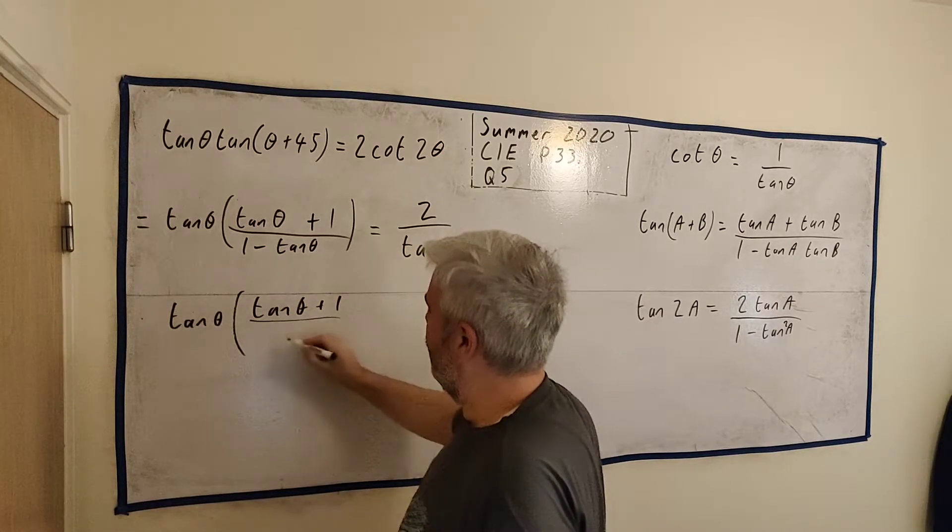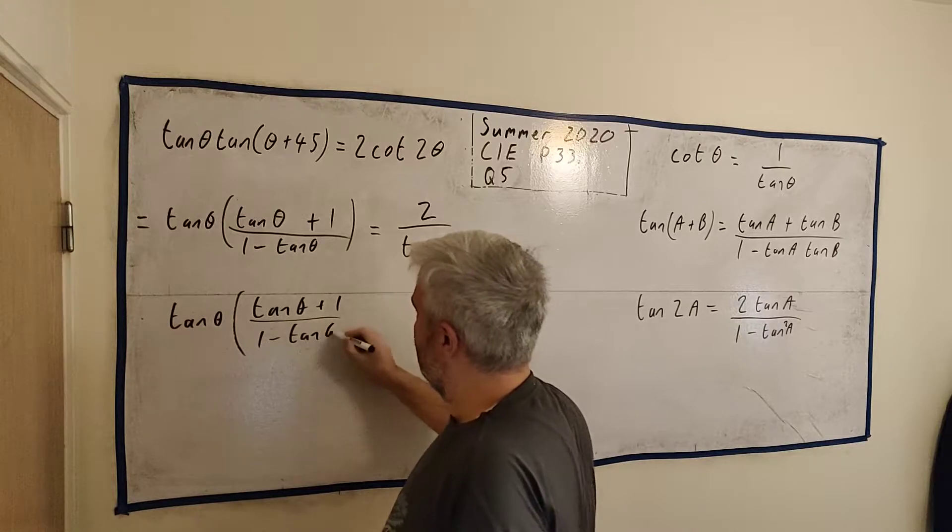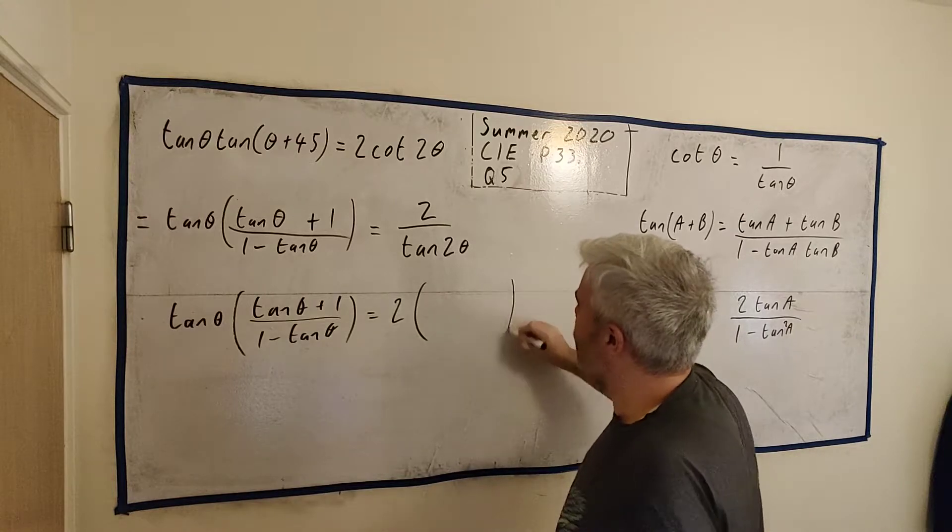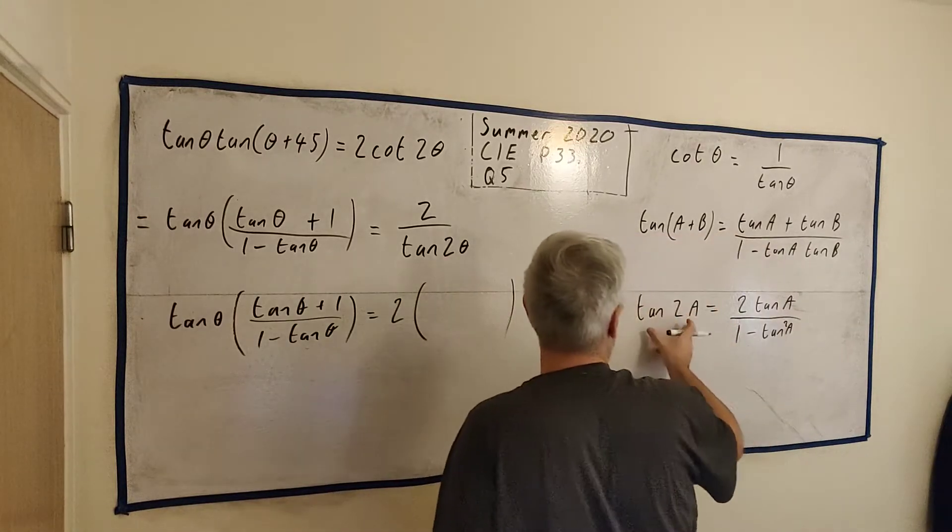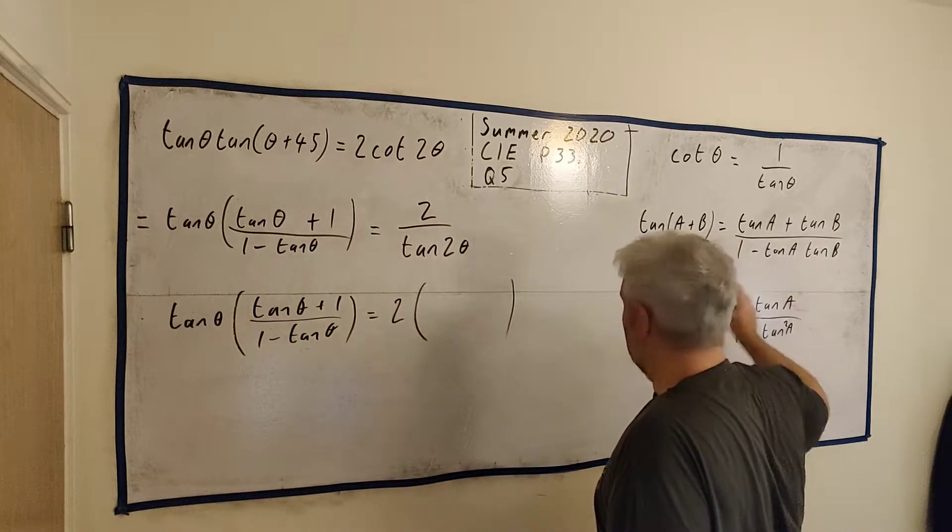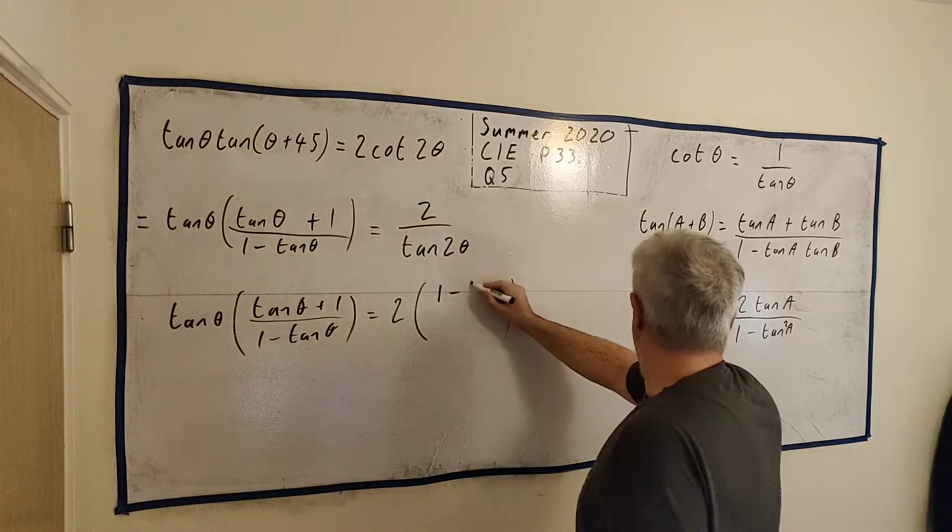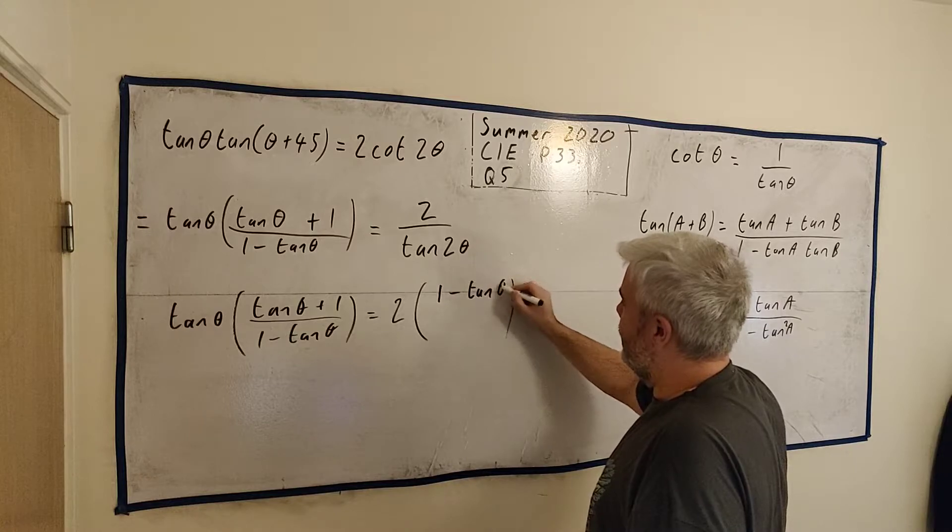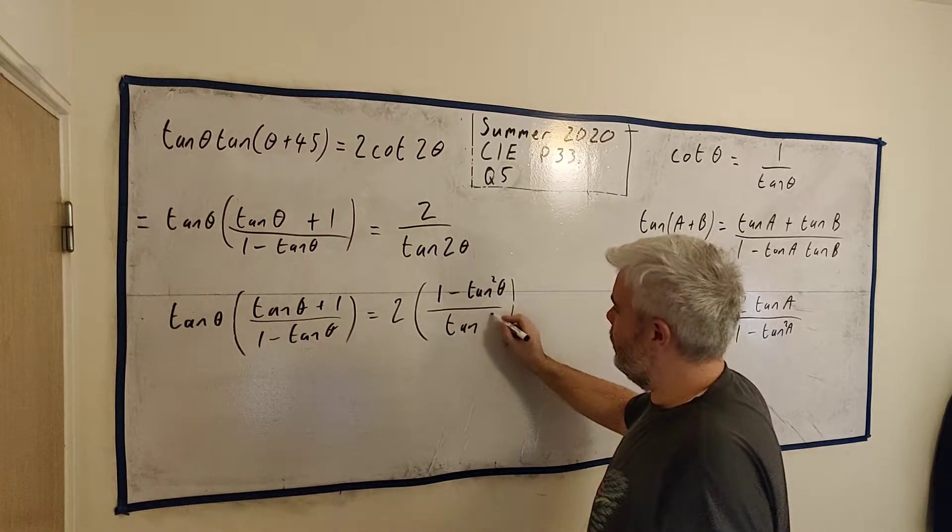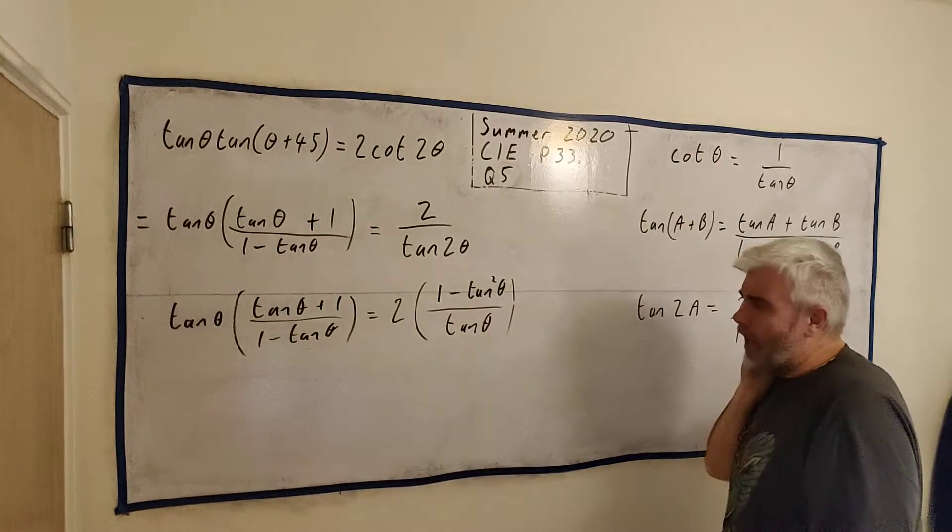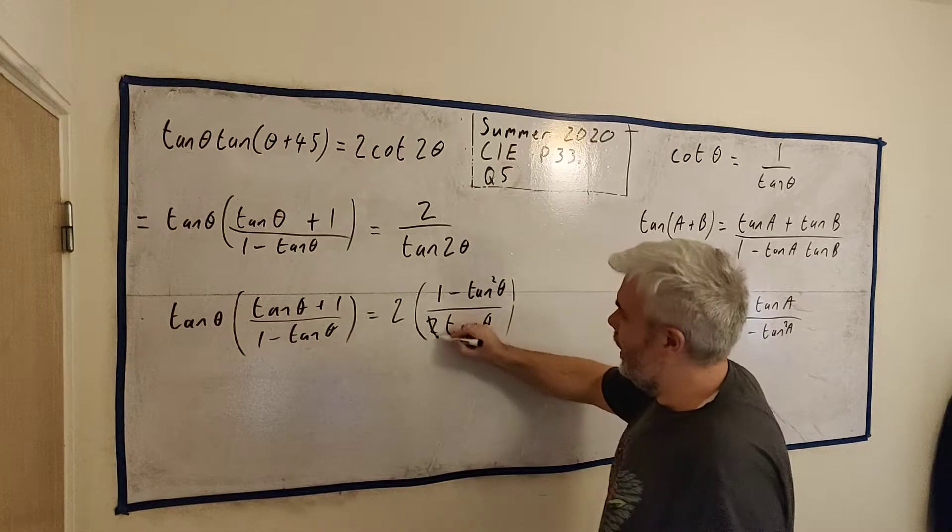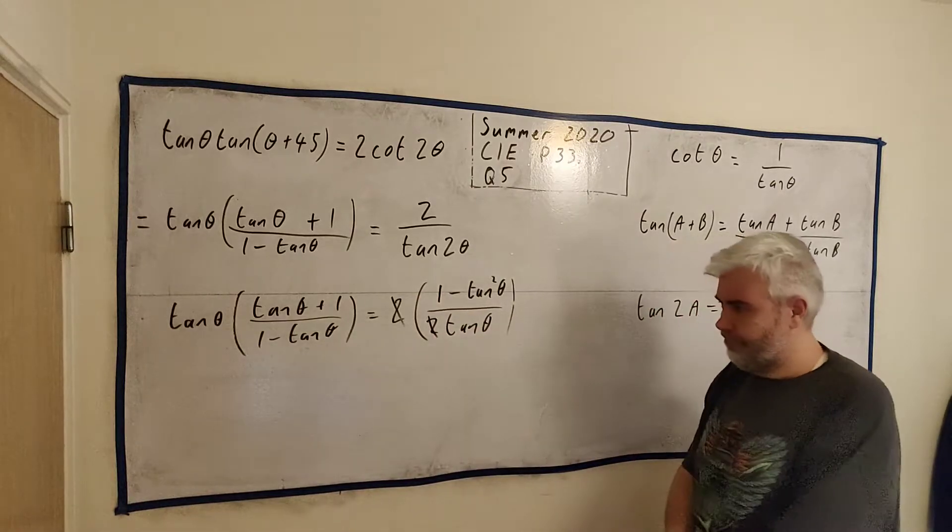okay is equal to 2 multiplied 1 divided by this is just this upside down so I can use this formula just upside down 1 minus tangent θ squared divided by tangent 2θ all right oh tangent 2θ should be down here and that 2 cancels with that 2